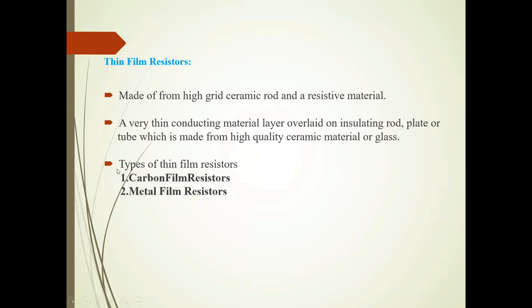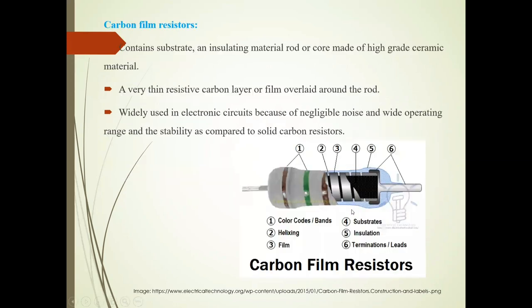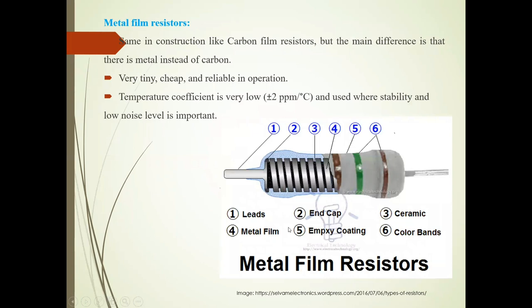Types of thin film resistors are carbon film resistors and metal film resistors. In carbon film resistors, the image shows color code bands, helixing, film, substrate, insulation, and leads. Metal film resistors have the same construction as carbon film resistors, but metal is used instead of carbon.